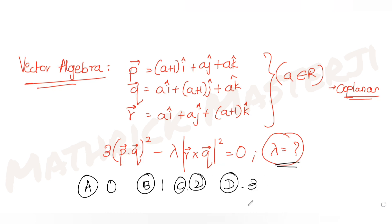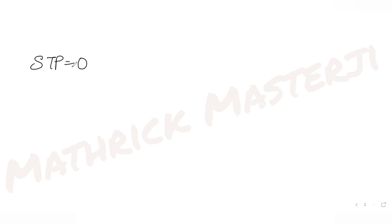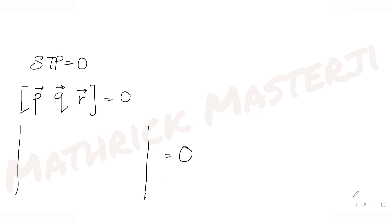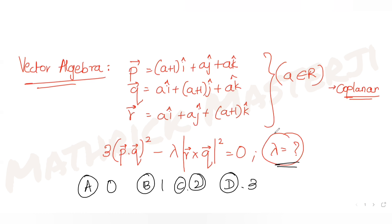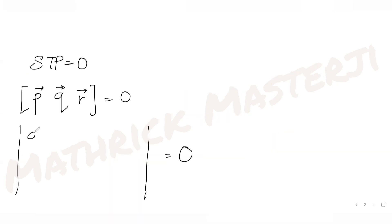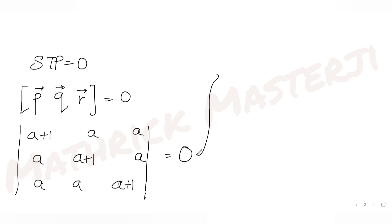Let's solve this question. Using the idea of vectors being coplanar, the scalar triple product is zero — the box product of p, q, r equals zero. The box product is the determinant of the coefficients of i, j, and k for all three vectors: (a+1), a, a / a, (a+1), a / a, a, (a+1).